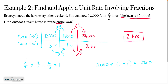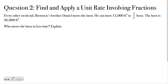If you have questions about that, please reach out. Otherwise, try this problem on your own. Every other weekend, Bronwyn's brother Daniel mows the lawn — they alternate every other week. He can mow 15,000 square feet in three quarters of an hour. The lawn is 36,000 square feet. Who mows the lawn in less time? Explain. Your work showing the steps will serve as your explanation. Good luck.